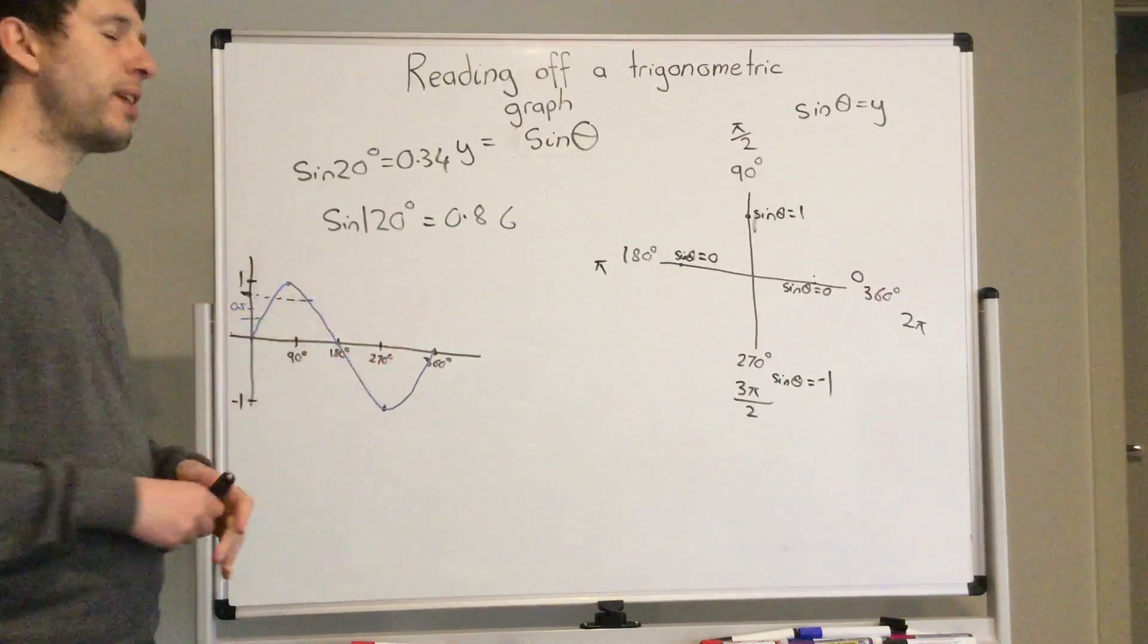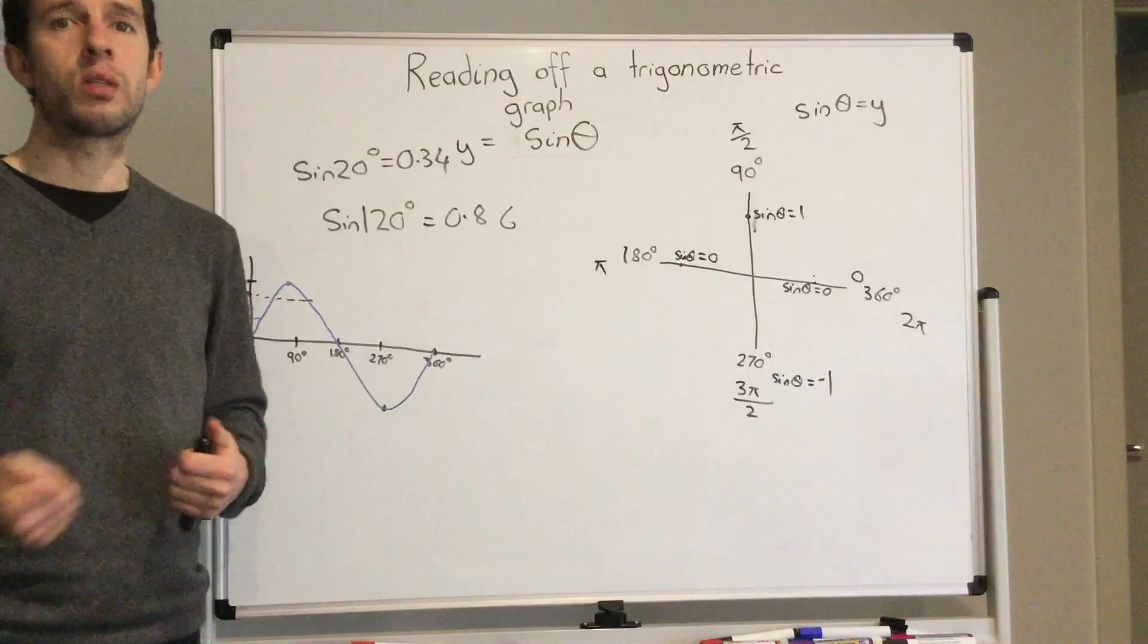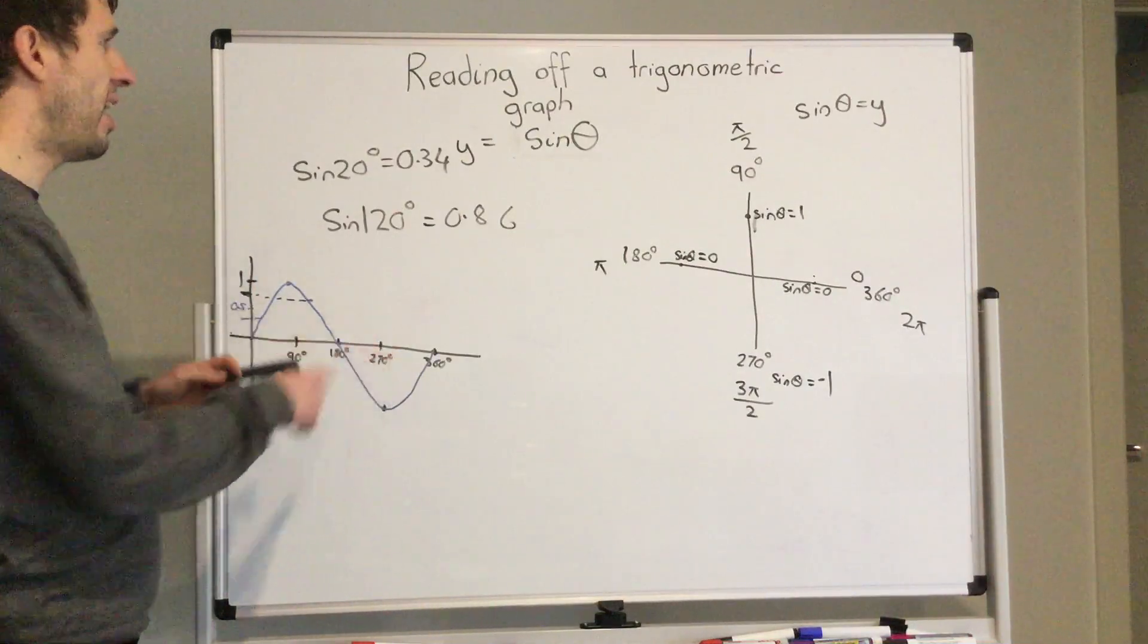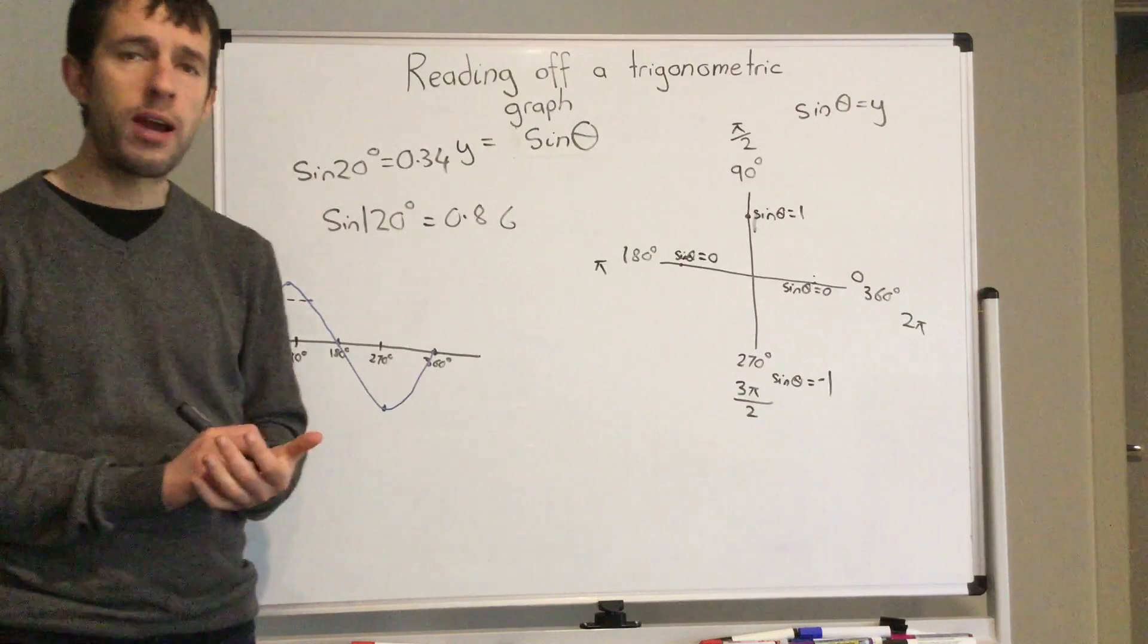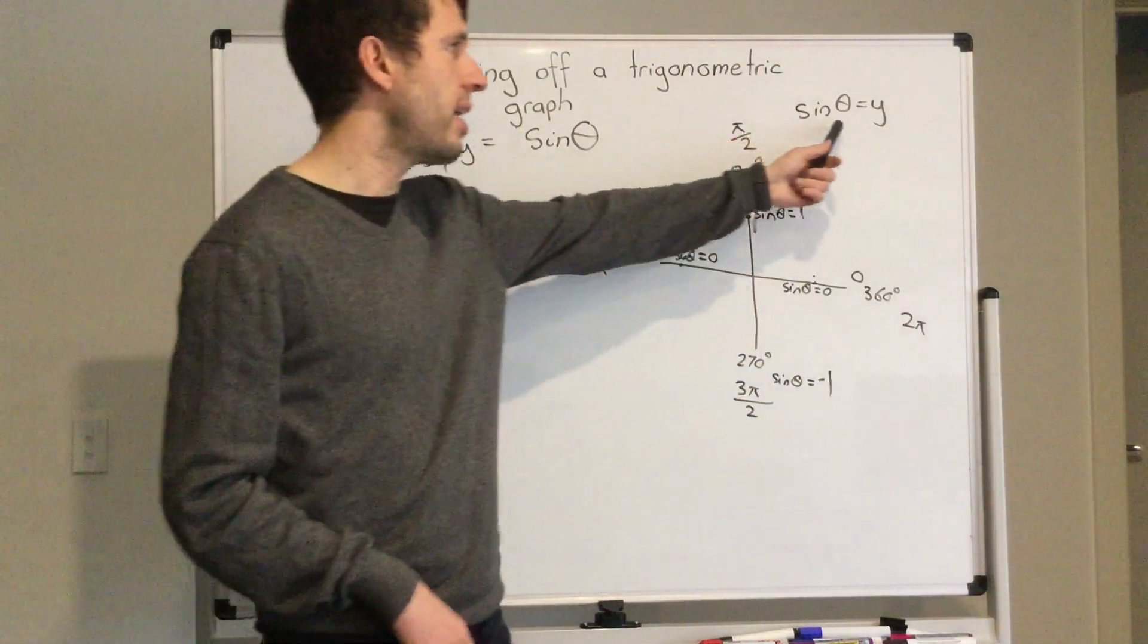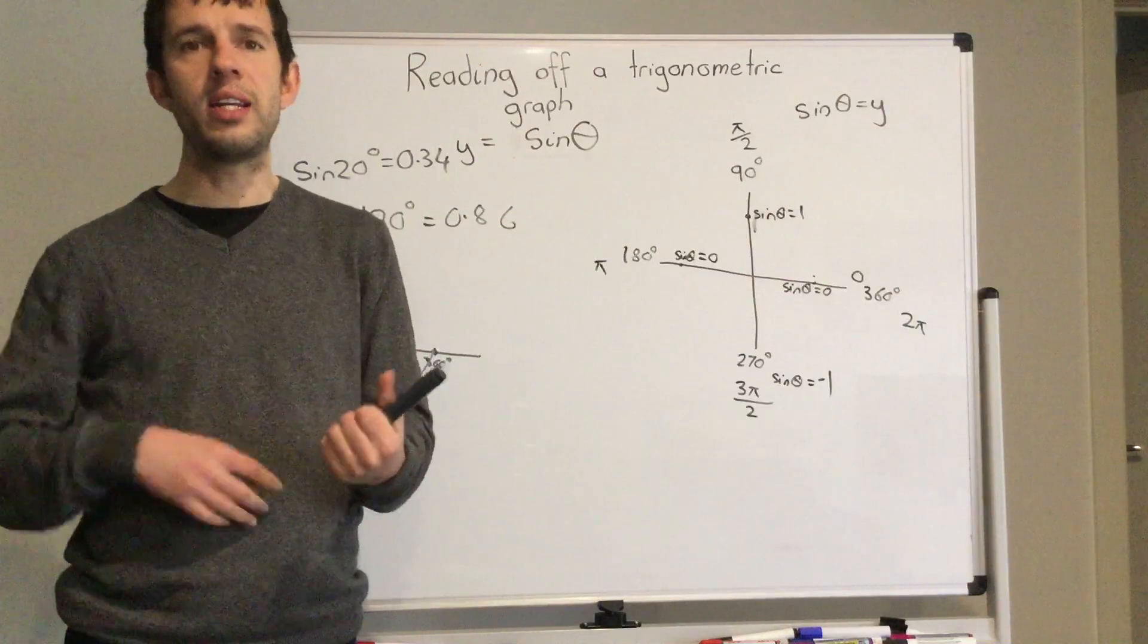And we can see what is bigger and what is smaller. I really hope that helps you understand how to graph a sine graph. Just remember, the reason why we started at zero is because sine alpha equals our y-axis, because sine is opposite over hypotenuse.